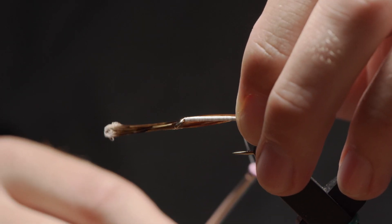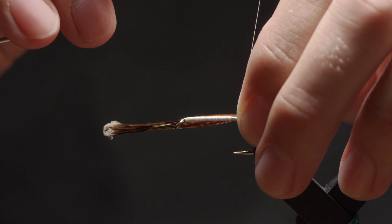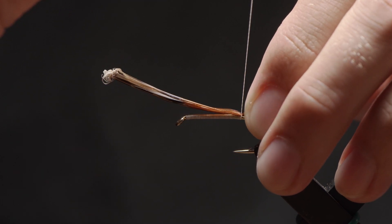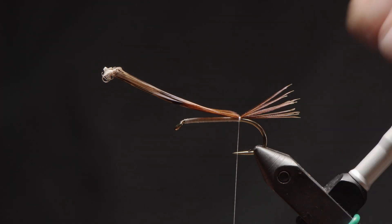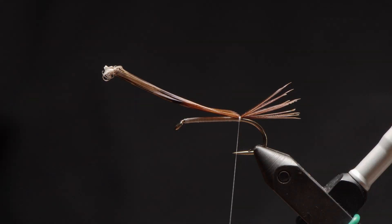You can even pinch it in place with your fingers if you'd like. And then when you get to the other side, you can tighten down, cinching that loop down, and make a couple more tight wraps. And it'll position the material where you want every single time.